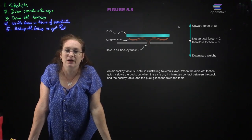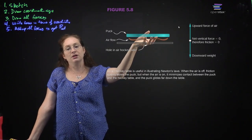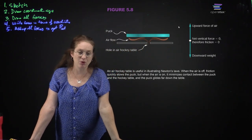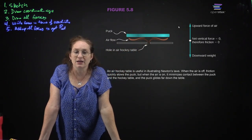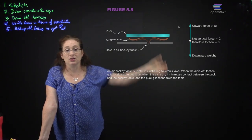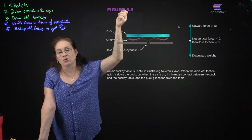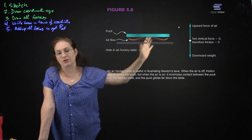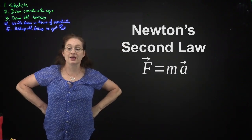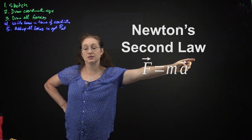On an air hockey table, air is blown up so the puck slightly floats, not making direct contact with the table. You can approximate this as having no friction, and you only need to consider weight, the normal force from the air cushion, and any contact forces when something hits it. Newton's second law: F equals ma, force equals mass times acceleration.